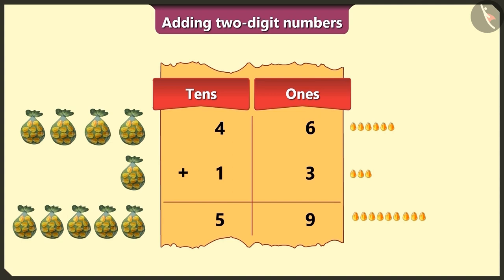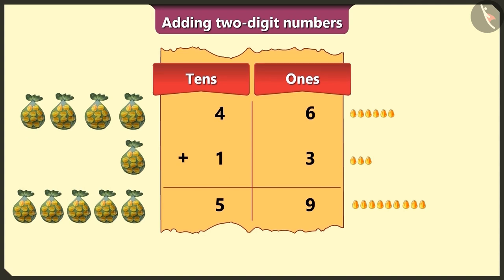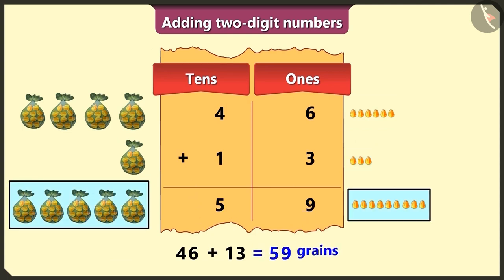So, how many grains do we have here in total? Here, if we add 4 tens and 6 grains to 1 ten and 3 grains, then we get a total of 59 grains. Yes, well done, Peeloo.